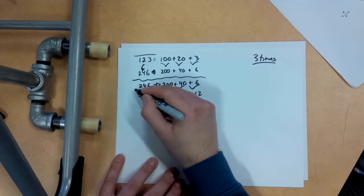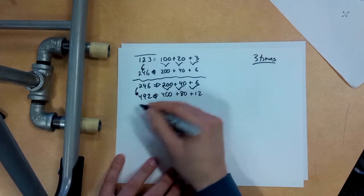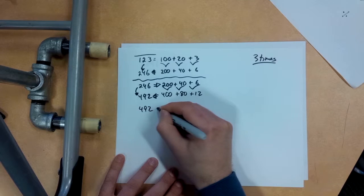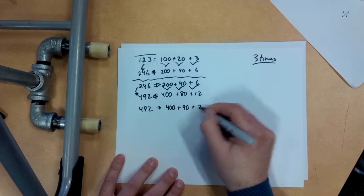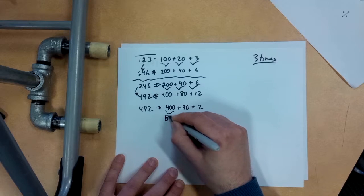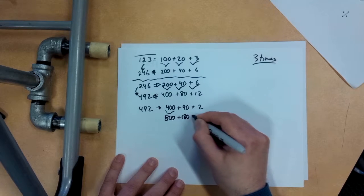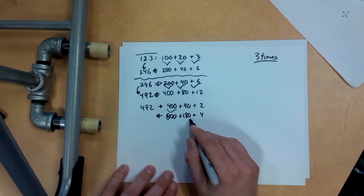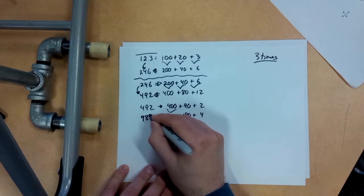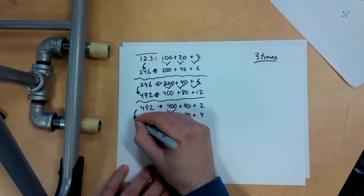So I've doubled it once, I've doubled it again, and I'm going to double it one more time. 492, so that's 400 plus 90 plus 2. Double that, that's 800 plus 180 plus 4. So we'll send her back there, 984.